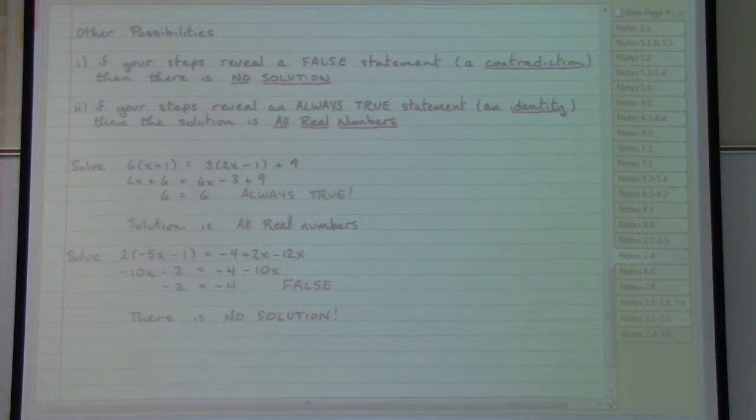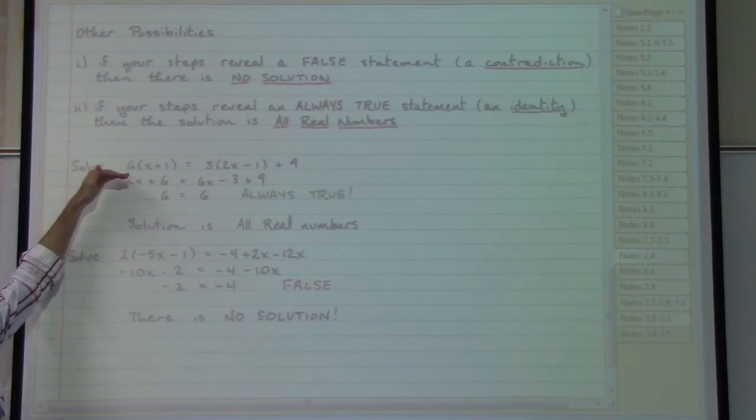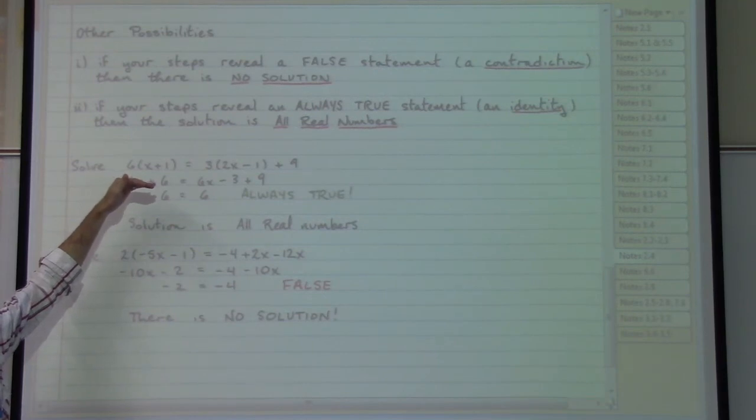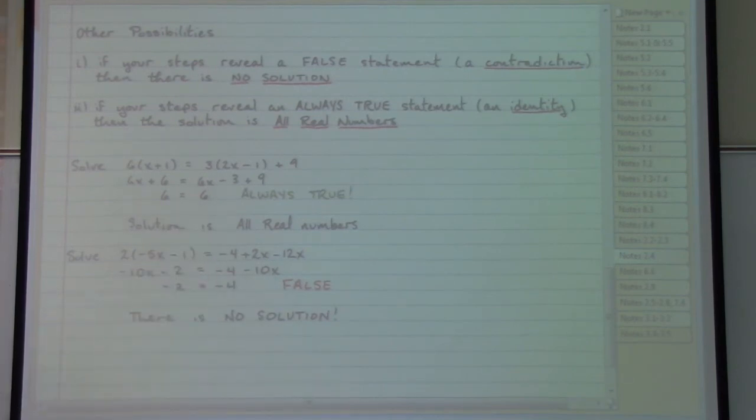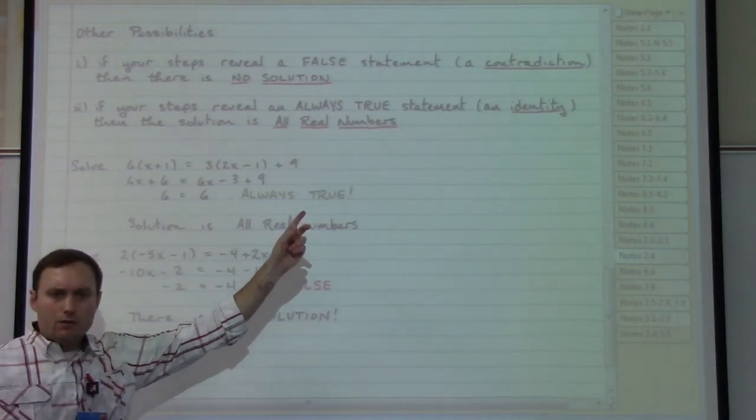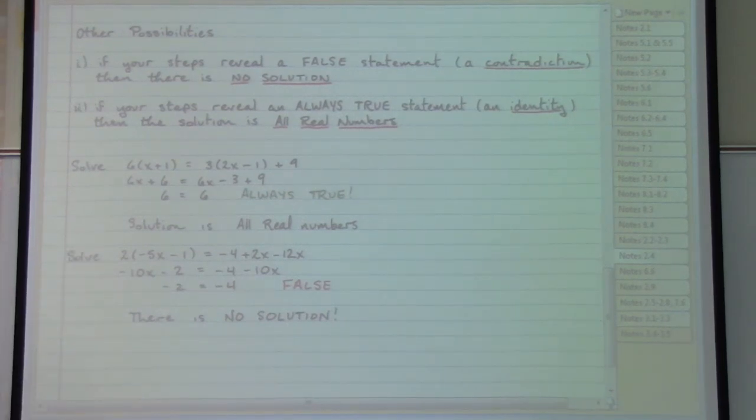We begin by simplifying the left side, simplifying the right side, combining like terms and attempting to collect all of our variable terms together. And in this particular example our variable term disappears entirely and leaves us with this statement 6 is equal to 6. That statement is always true. Since that statement is always true and does not depend at all on the x, you could have picked any x in the entire universe and everything would have worked out just fine. So if you can pick any number, specifically any real number, then we would need to say that is our solution.